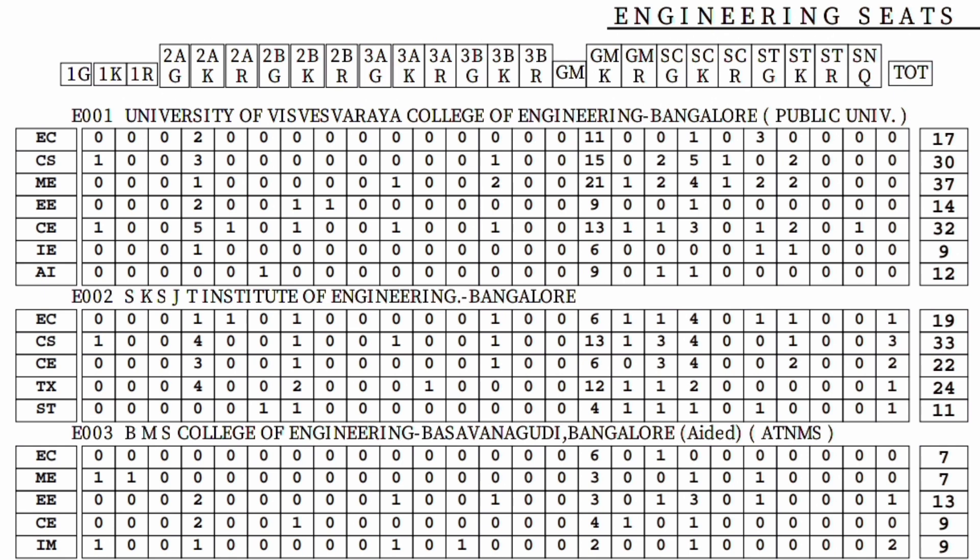I am just taking a sample — this is the first page of the seat matrix which was released by KEA yesterday. If you see how to read it, the first college on the list is E001, which is University Visvesvaraya College of Engineering, Bangalore.